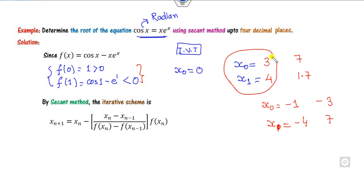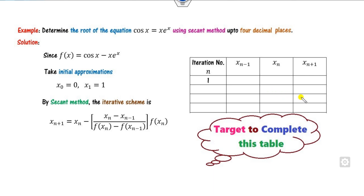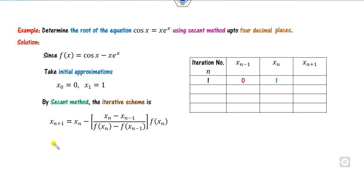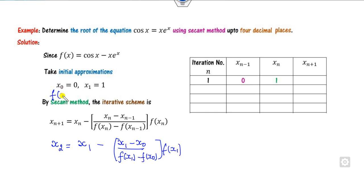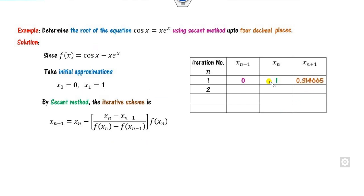You can choose x₀ and x₁ as any values satisfying the intermediate value property. Our target is to complete the table. When n = 1, x₀ = 0 and x₁ = 1. Now substitute these values. X₂ = x₁ − (x₁ − x₀) / (F(x₁) − F(x₀)) × F(x₁). F(x₀) = cos(0) = 1. F(1) = cos(1) − 1 × e^1. Calculate from your calculator, substitute all values, and you will get the correct answer.